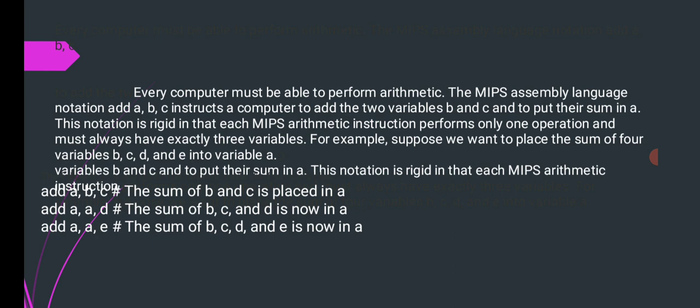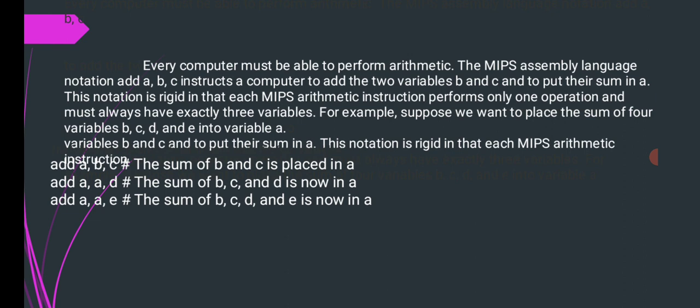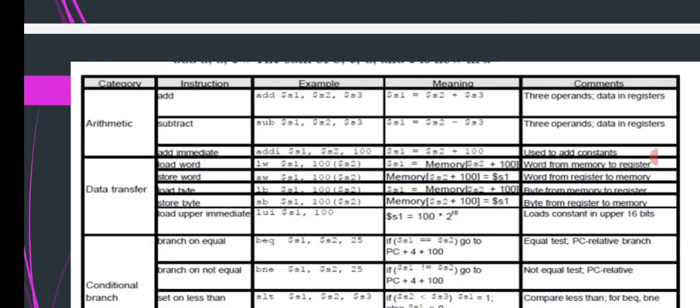D and E into variable A. The notation is rigid in that each MIPS arithmetic instruction performs only one operation. This is the example: ADD A, B, C means the sum of B and C is placed in A. ADD A, A, D, the sum of B, C and D is now in A. ADD A, A, E means the sum of B, C, D and E is now in A.